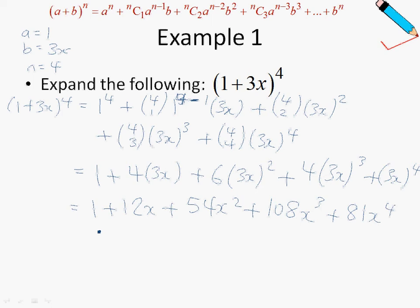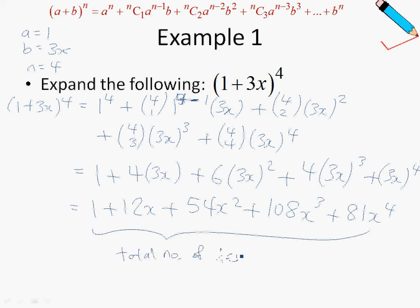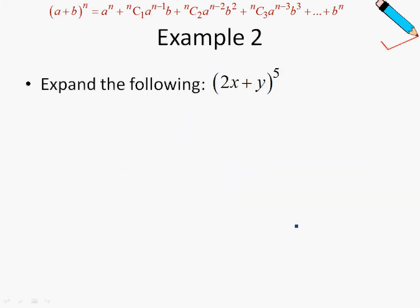Before we move on to the next example, just notice that in total I have 5 terms. I want to point out a very important point: the total number of terms is always n plus 1. In this case, since n is 4, 4 plus 1 will be 5 terms — so that's why there are 5 terms here.